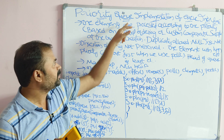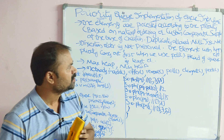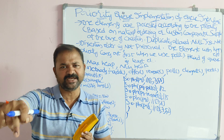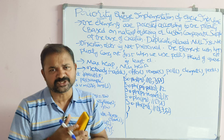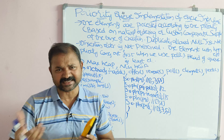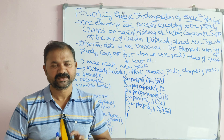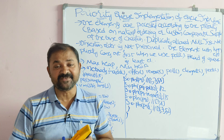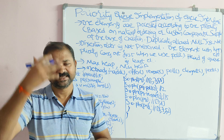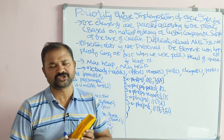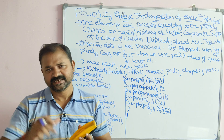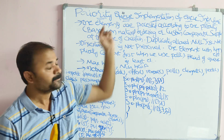Let us discuss Priority Queue implementation of the Queue interface. Queue is an interface available in the util package. In order to use the full functionality of the Queue interface, there are three classes: LinkedList, ArrayDeque, and Priority Queue class. In the last two videos, we have already seen LinkedList and ArrayDeque. In this video, we are focusing on Priority Queue class.